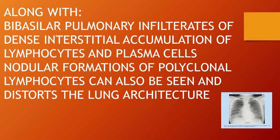Along with that there are bibasilar pulmonary infiltrates of dense interstitial accumulation of lymphocytes and plasma cells. As seen in the X-ray diagram, these infiltrates are bibasilar at the base of both lungs, where lymphocytes and plasma cells accumulate together.